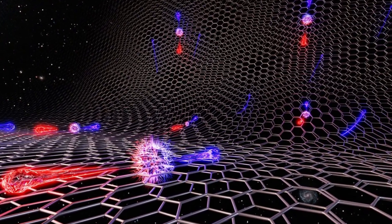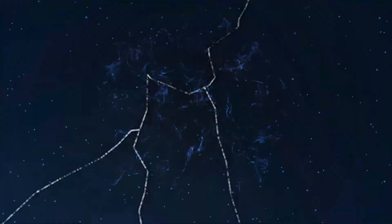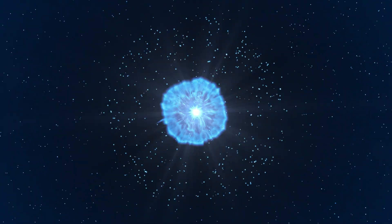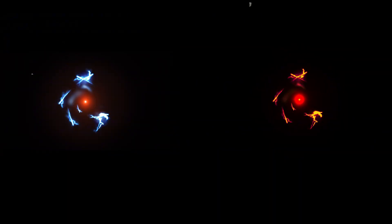The Schwinger effect describes how a strong electric field can split empty space into particle-antiparticle pairs. When the field is intense enough, it provides the energy to create these particles out of the vacuum.